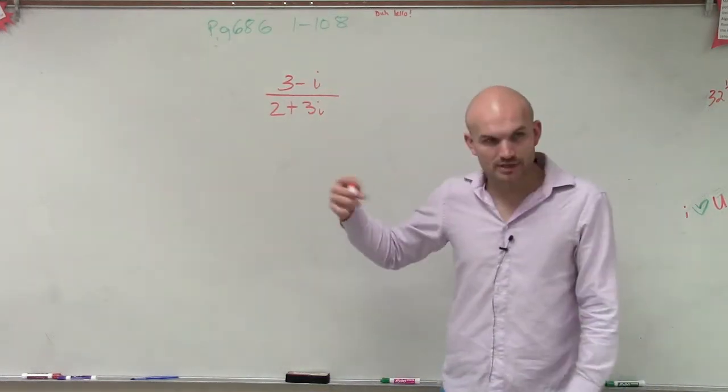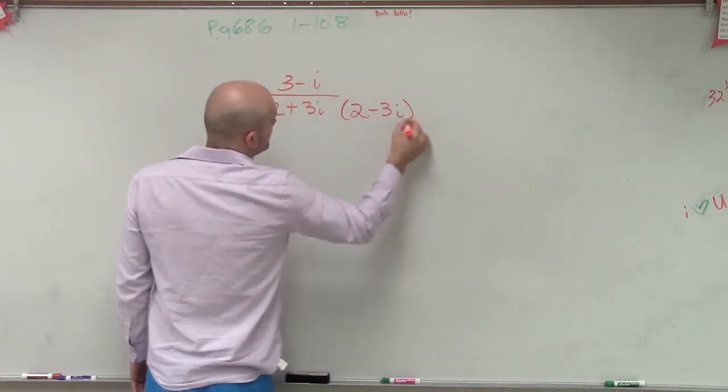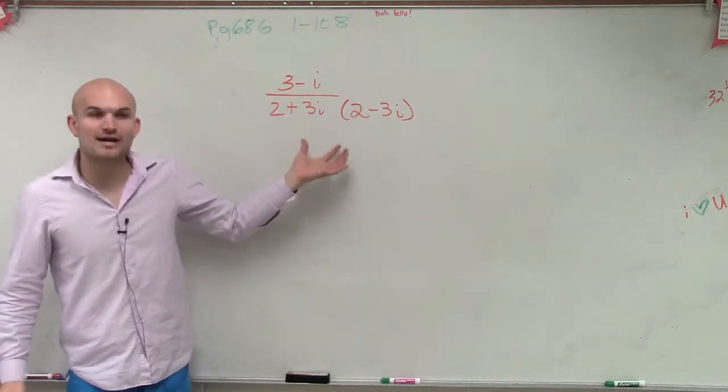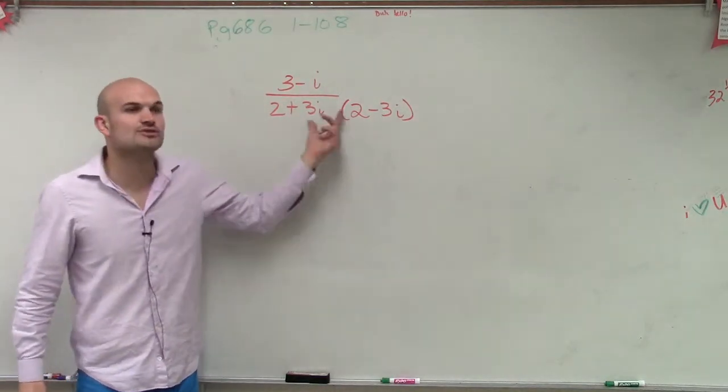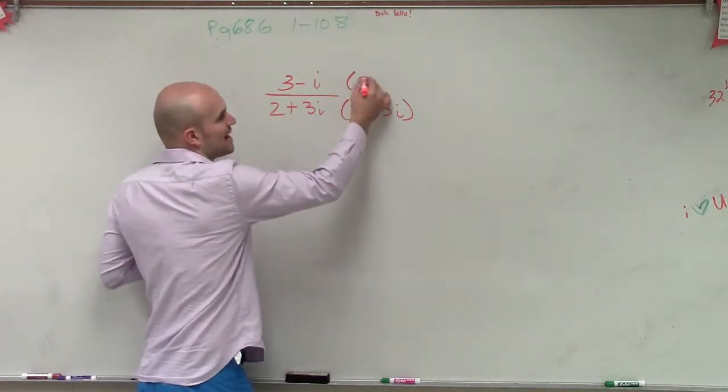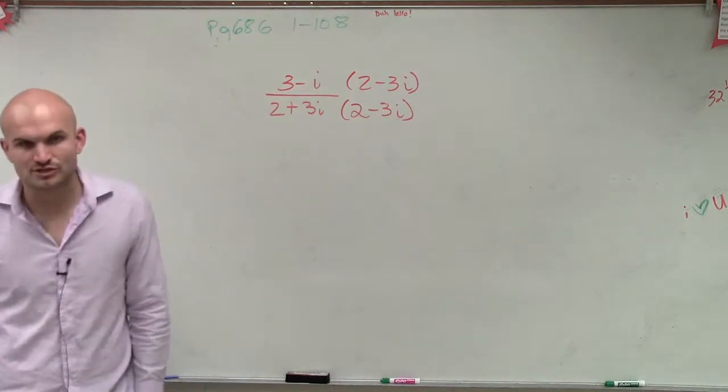So what we're going to do is multiply by the conjugate. And remember, the conjugate for this is going to be 2 minus 3i. So when you have this binomial, the conjugate is 2 minus 3i. But remember, we need to keep equivalent fractions. So I need to multiply the numerator and the denominator by 2 minus 3i.